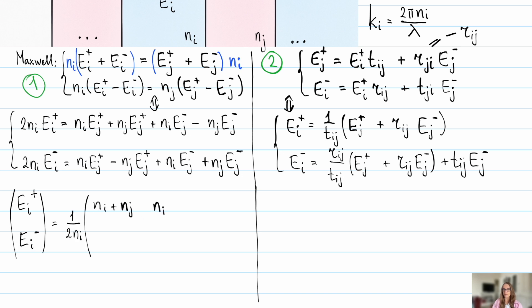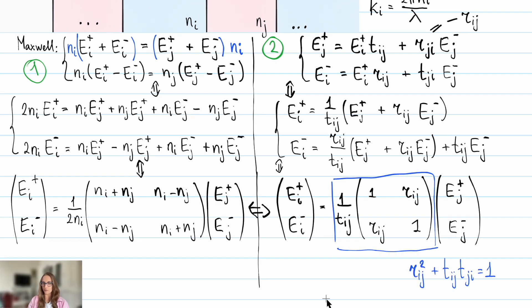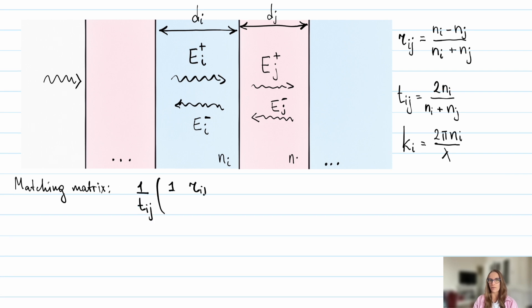In any case, after some algebra and rewriting things in matrix form, both methods lead to the same result. So, we now have a matrix that connects the fields at the interface. It is sometimes called a matching matrix.